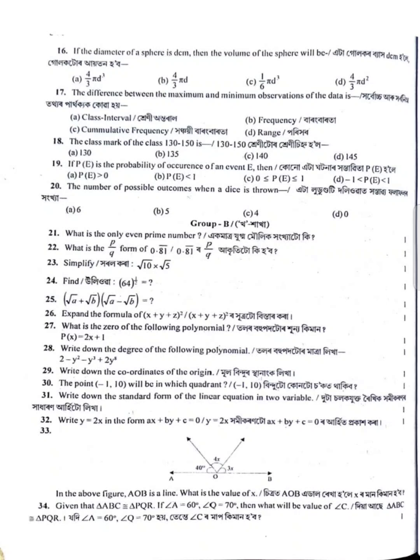The range is defined as the difference between the maximum and minimum observations of the data. The answer is D — range is the difference between minimum and maximum, which is distinct from class interval, frequency, and cumulative frequency. The class mark of the class 130 to 150 is also asked, and the class mark is calculated.